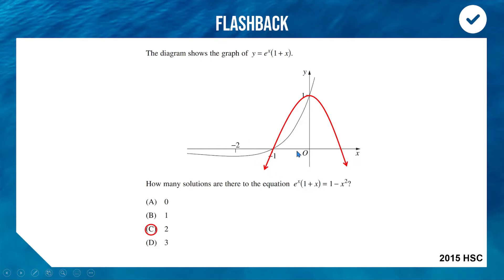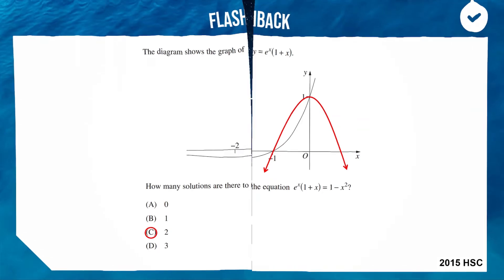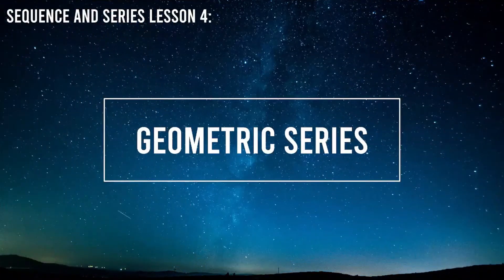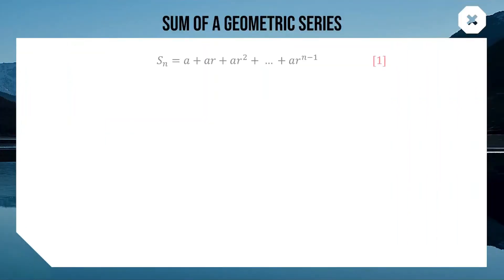So the equation has two solutions — two intersection points. Today's lesson is all about geometric series. Last lesson we looked at geometric sequences; today we are going to be adding those together and forming a series. This is what a geometric series looks like: the first term is represented by a, and the common ratio — the number we multiply to get the next term — is represented by r.